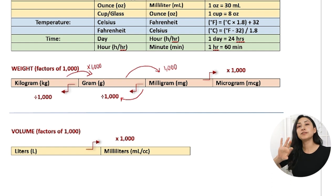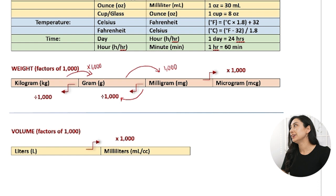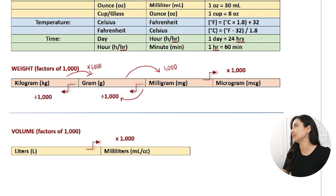So you can see here, if I go left on the chart, I am dividing. And if I go right, I am multiplying. By what factor you are dividing or multiplying will depend on you being able to memorize which factors you're multiplying or dividing by.